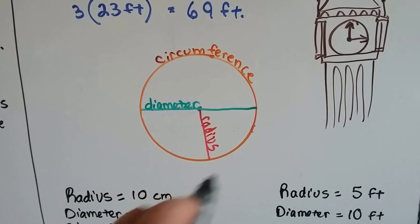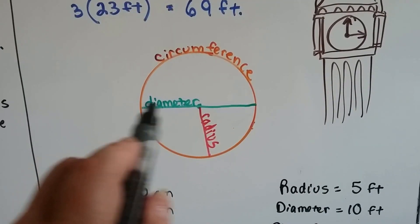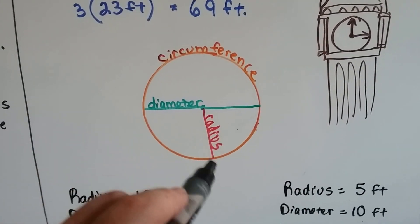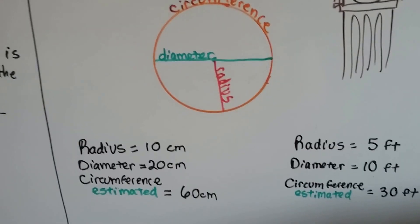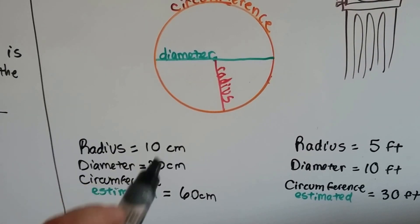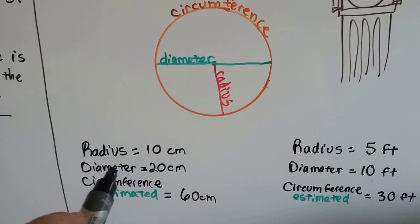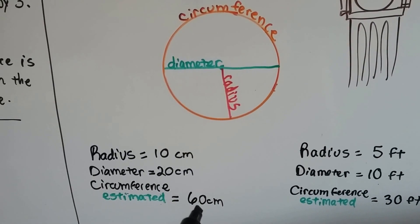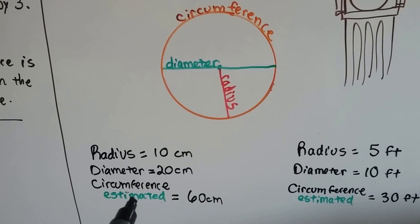So remember, the circumference is this orange line around. The diameter cuts the circle in half, and the radius is half the diameter. So if it said the radius is 10 centimeters, we could double that to 20 to get the diameter, and triple the diameter to 60 to get an estimated circumference.